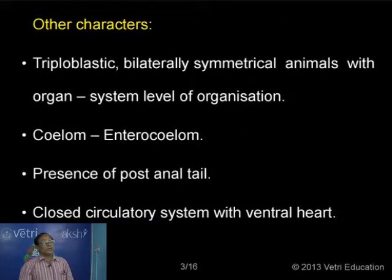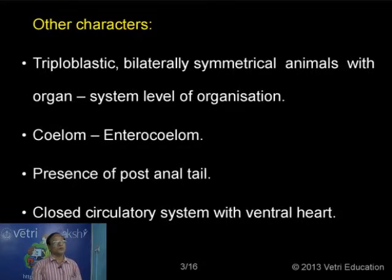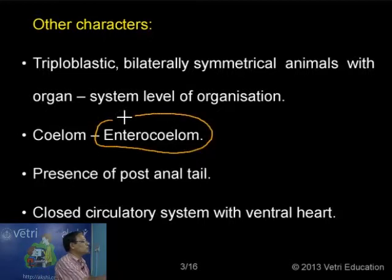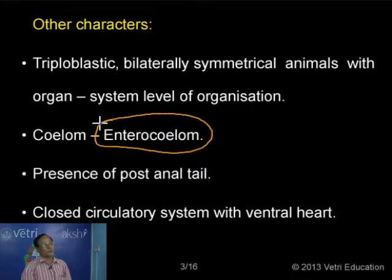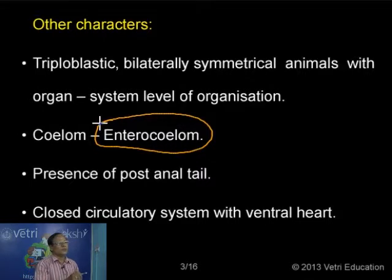All chordate animals are triploblastic. No radially symmetrical animals in the case of chordates - all are bilaterally symmetrical, having organ system level of organization, with the various systems such as the circulatory system, digestive system, etc. The nature of the coelom is enterocoelom. There are two different types of coelom: schizocoelom and enterocoelom. Both are considered as true coelom, together called eucoelom.